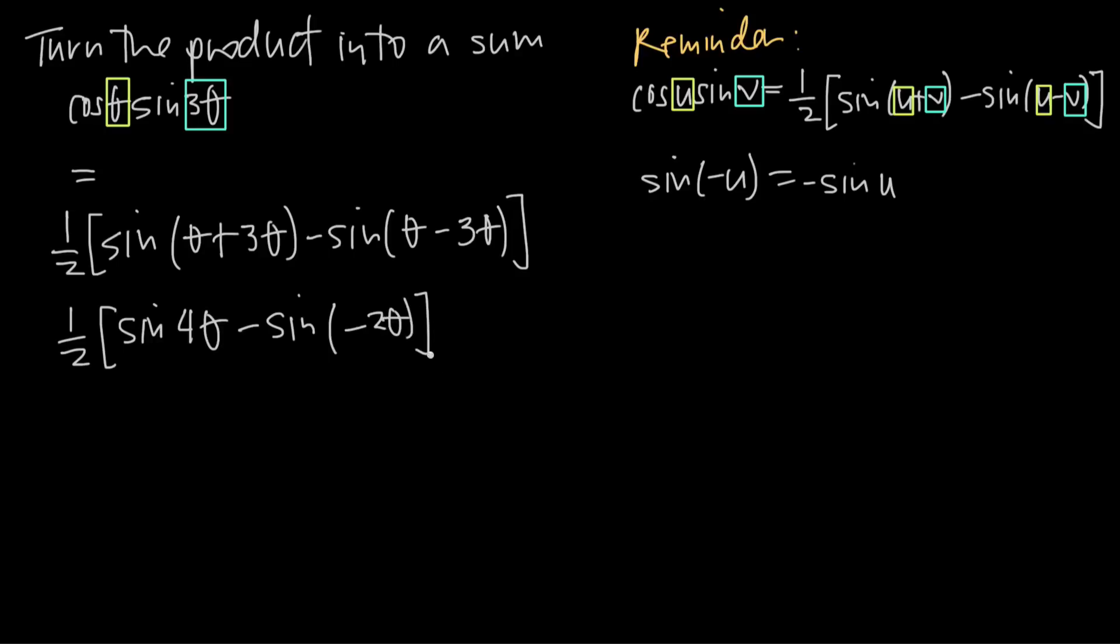Now technically, I could leave the answer in this form, but it's a little messy having this negative angle. So in order to fix that, I can bring in this extra formula, which tells me that sine of negative u is equal to negative sine of u.